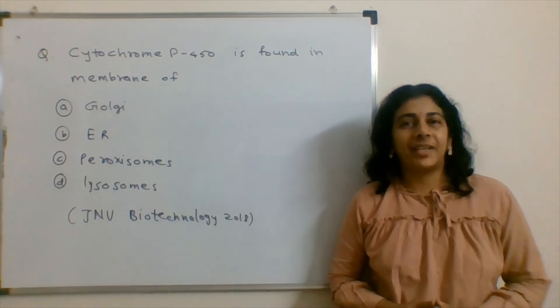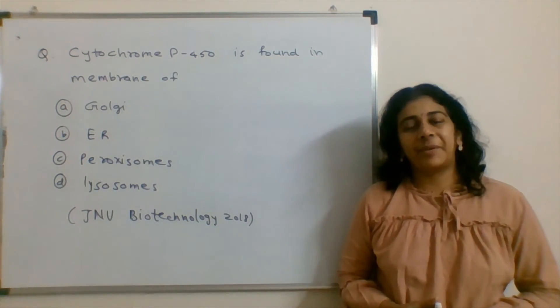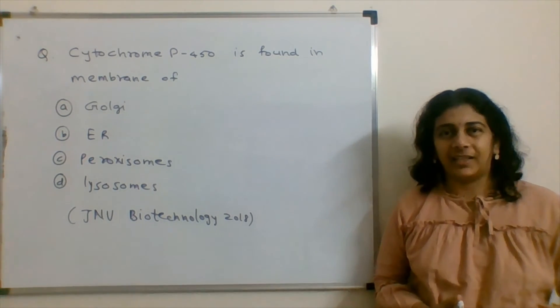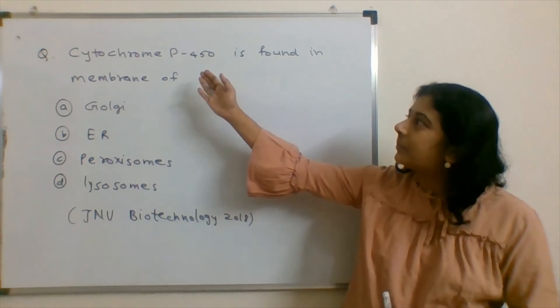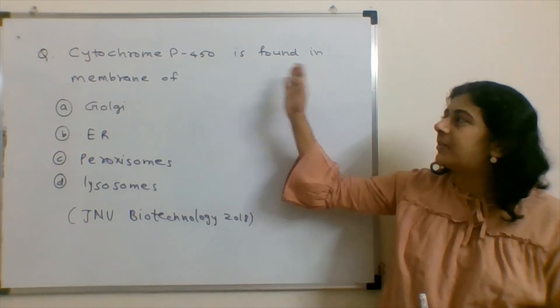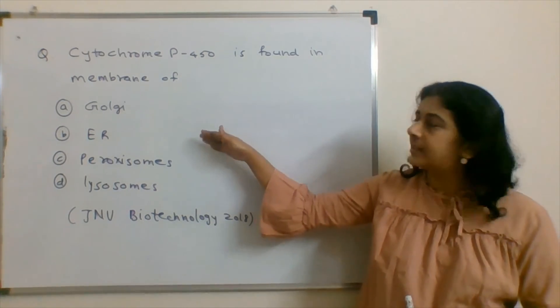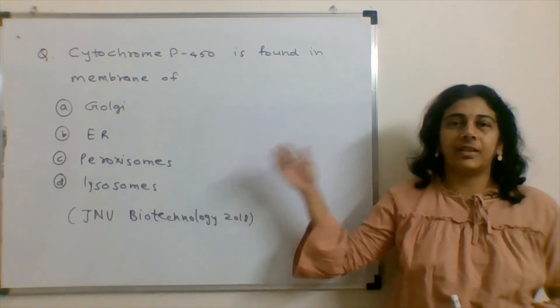The question for my next video is from the same paper, that is the JNU Entrance for Biotechnology 2018. Cytochrome P450 is found in the membrane of Golgi, ER, Peroxisome, or Lysosomes.